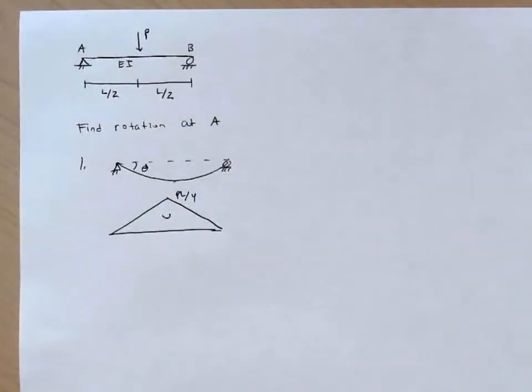But we'll just draw in the moment here. Hopefully at this point you even have this one memorized. Simply supported beam, point load P in the middle, the moment diagram is triangular, magnitude of PL over 4. So recall that when we're working on these problems for deflections by virtual work, we need to be fairly good at this point at generating our moment diagrams.